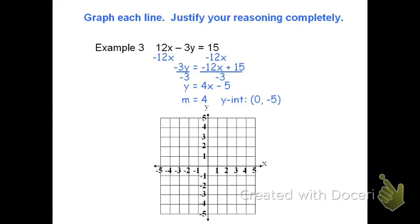Starting with the y-intercept, visualize where to plot the point zero comma negative 5. It's on the bottom, 5 units below the origin.